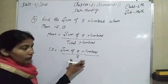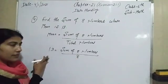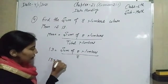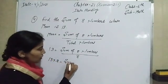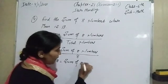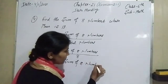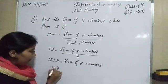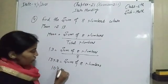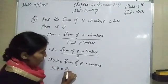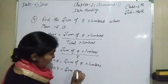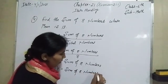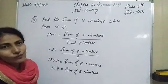Since 8 is dividing on the right-hand side, it will multiply on the left-hand side. So 13 multiplied by 8 equals the sum of 8 numbers. Doing this multiplication you get 104 — that is the sum of 8 numbers, which is our required answer.